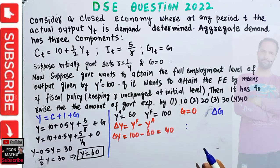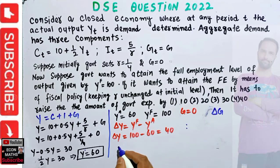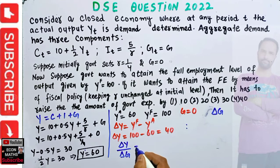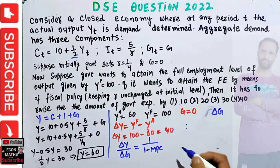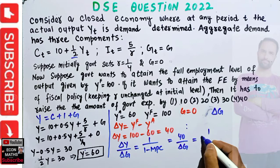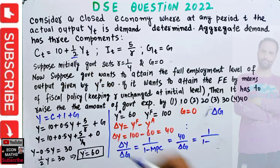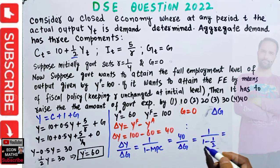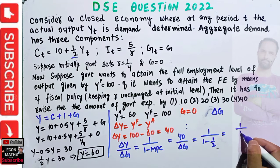We can use the government expenditure multiplier formula. The multiplier is: change in output divided by change in government expenditure = 1 / (1 − MPC). Our MPC is 1/2. So: 40 / ΔG = 1 / (1 − 1/2) = 1 / (1/2) = 2.